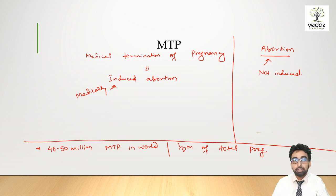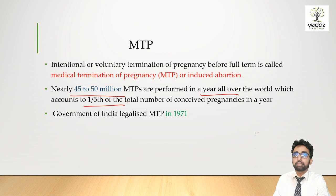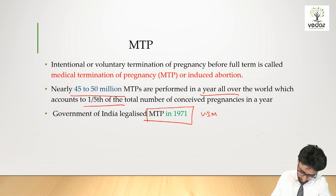NCERT is saying, is MTP population control? Of course, it is not meant for population control, but you have to look at the data that 45 to 50 million MTPs are performed per year. The first time MTP Act came in India in 1971, very important. After that many amendments have been done, in 2017 also one amendment has been done.